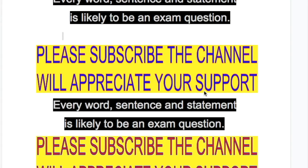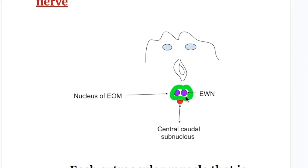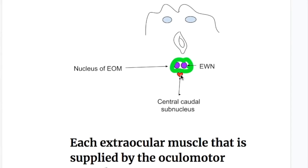In this video, we'll discuss the nuclear lesions of the oculomotor nerve. I made a sketch for easy understanding of the nucleus of the oculomotor nerve. Two circles in the middle are the Edinger-Westphal nucleus, the parasympathetic nucleus which supplies the internal ocular muscles, the constrictor pupillae and the ciliary muscles. The green bigger circle is the nucleus that supplies the extraocular muscles of the eye except for superior oblique, which is supplied by the trochlear nerve, and the lateral rectus which is supplied by the sixth cranial nerve. Below, the red color heart shape is the central caudal subnucleus that supplies the levator palpebrae superioris muscle.